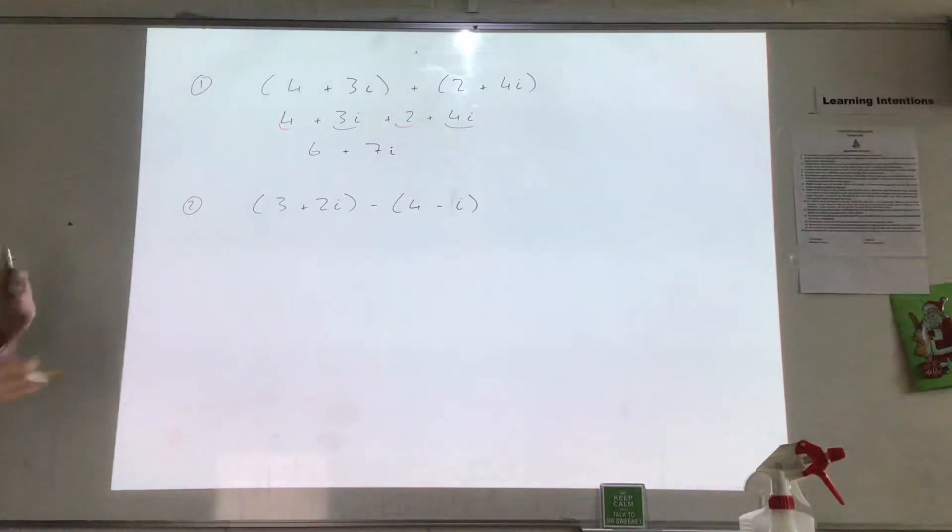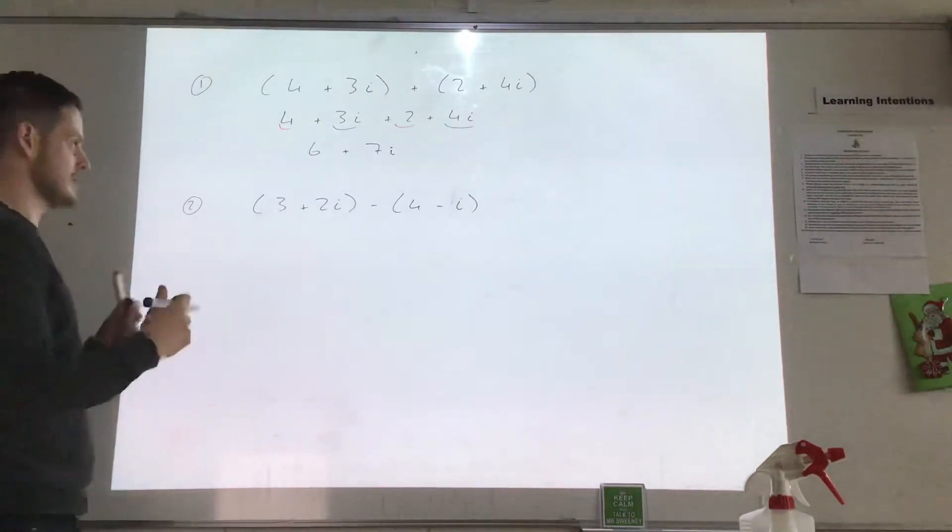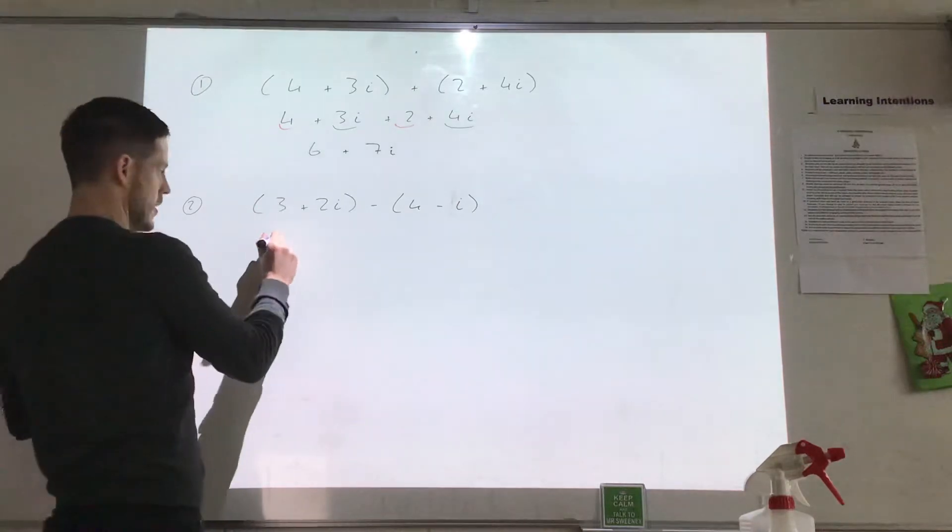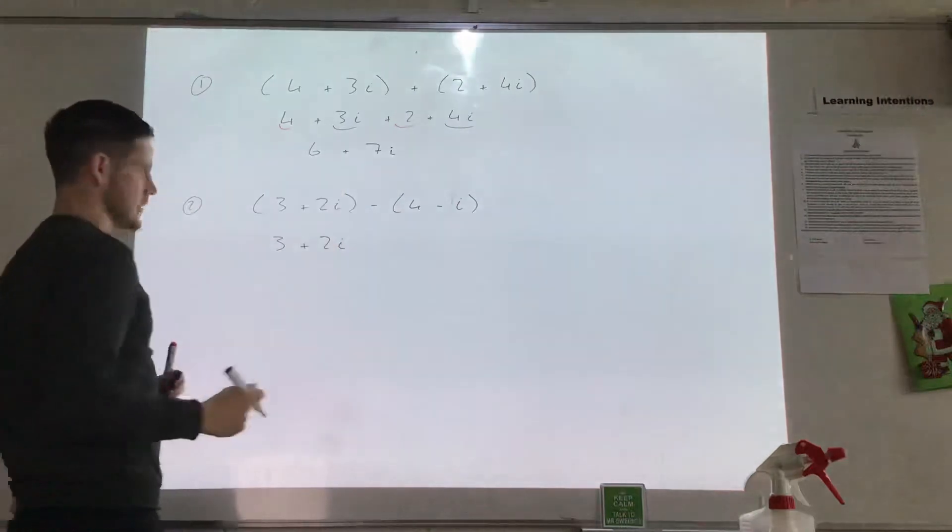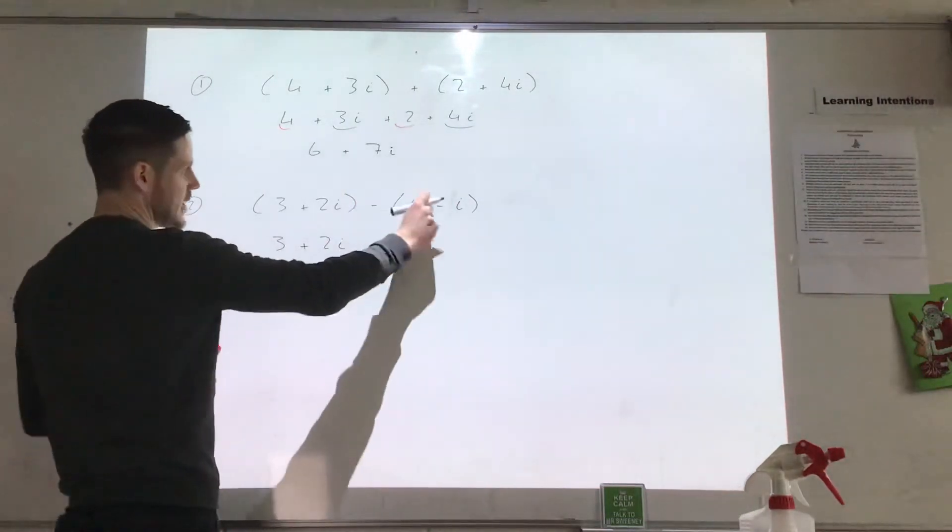This one here is a little bit trickier but not too much more. So we'll start off at the beginning as well. We get 3 plus 2i. We get rid of the brackets on that. Now this minus changes signs.